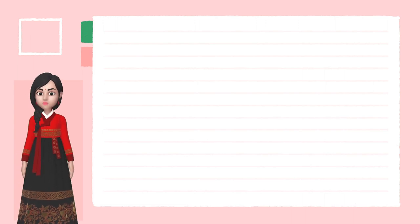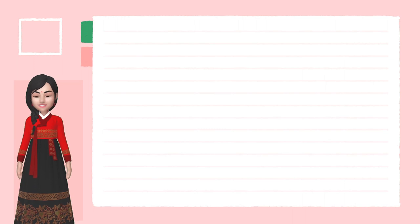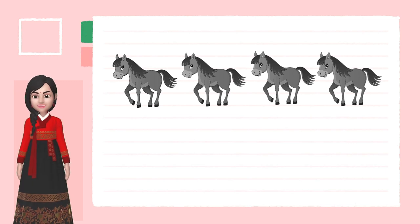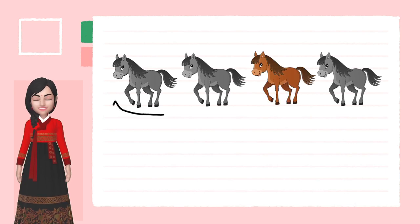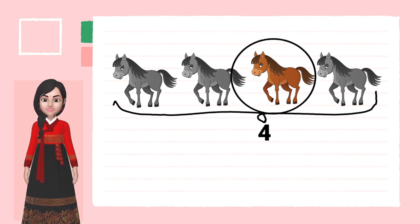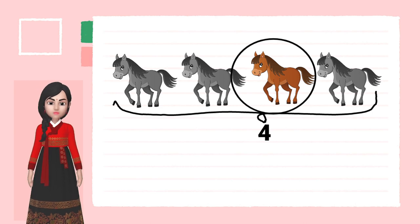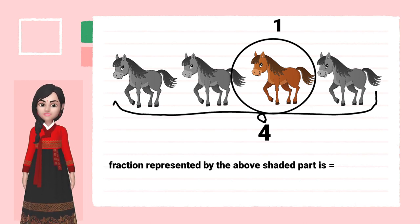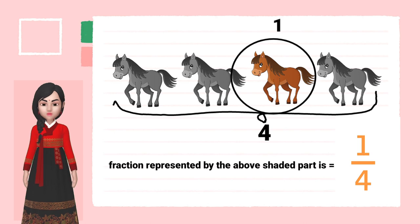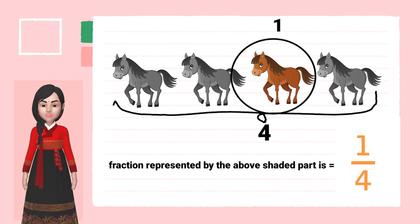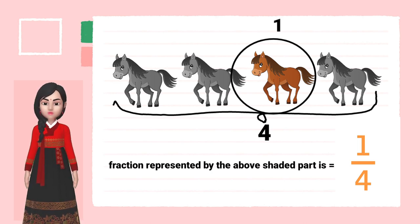Dear children, now I will show you some pictures on the screen. How many horses do you see on the screen? There are four horses. How many colored horses are there on the screen? Only one. Can you represent this in the form of a fraction? Yes, it's one by four. There are four horses and one is colored and the fraction is one by four.